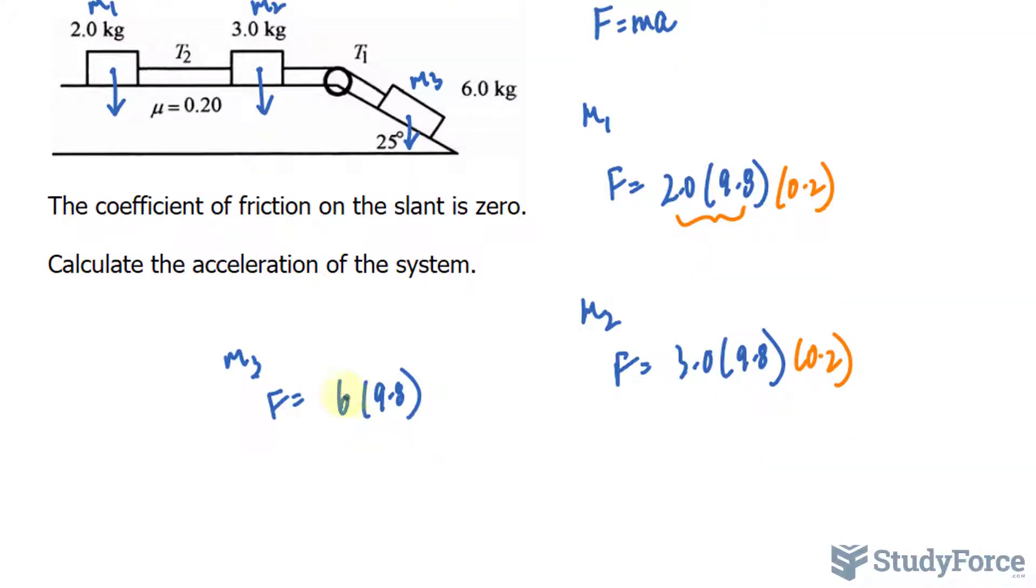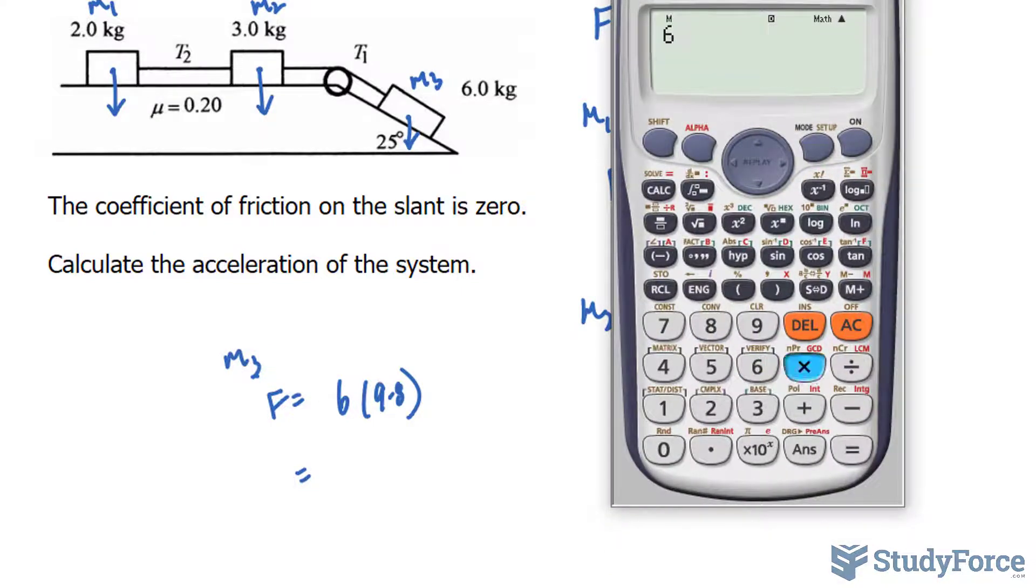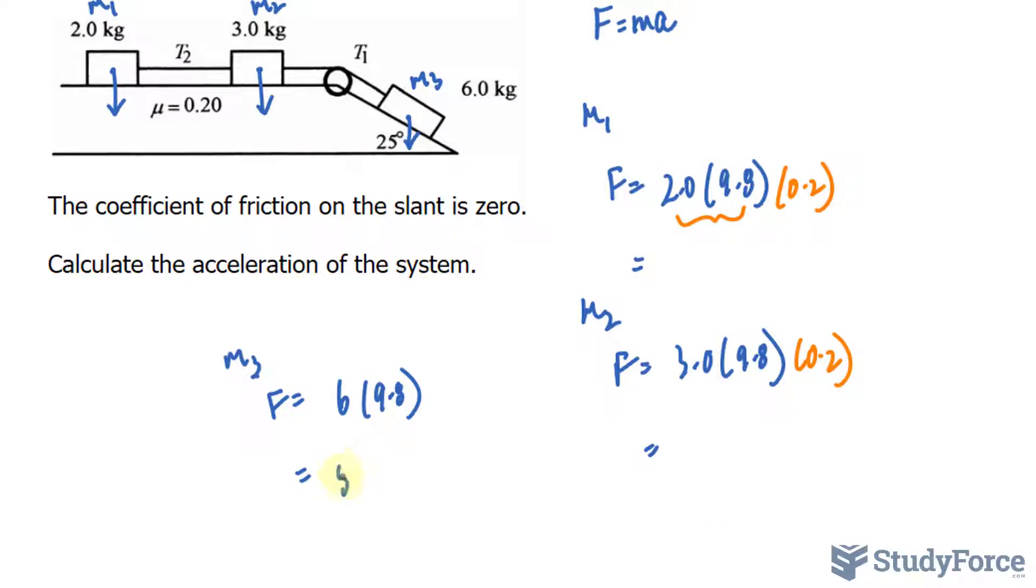We will be using this later on in the question. So finding out what these values are, these will serve as the magnitude for each of these vectors. So I'll begin with m3, 6 times 9.8, that gives us 58.8, and newtons is the unit for force. And the rest, if you calculate them on your own, should be the following.